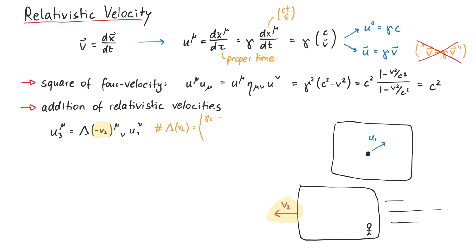Usually the transformation matrix lambda looks like this, where beta and gamma are useful abbreviations. This means for a boost velocity minus v2, we get a plus sign here and here. If you go ahead and do this matrix multiplication, you will find a result like this.